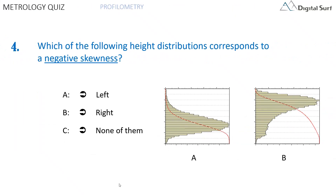Question number four. Which of the following height distributions corresponds to a negative skewness? Answer A: the distribution shown on the left. Answer B: the distribution shown on the right. Answer C: none of them. One correct answer only.